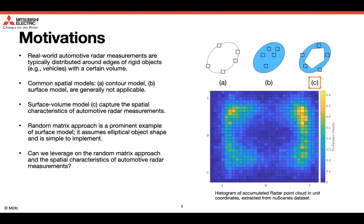The focus of this paper is on extended object tracking with automotive radar. The figure on the right shows the histogram of accumulated radar point cloud for vehicle detections in a vehicle coordinate system, extracted from the nuScenes dataset. As can be seen, real-world automotive radar measurements are typically distributed around the edges of rigid objects, like vehicles, with a certain volume.